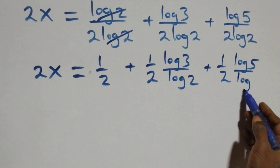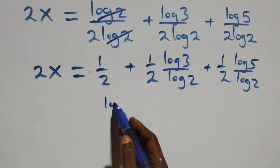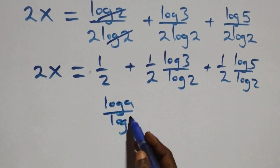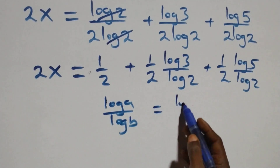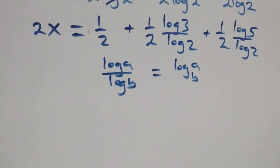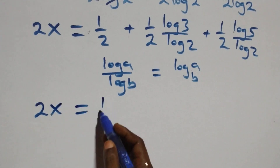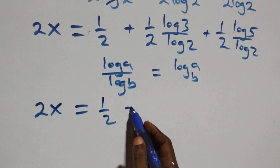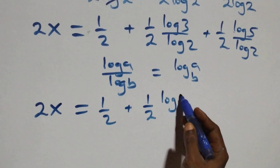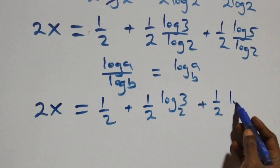We apply the change of base formula, where log a over log b equals log base b of a. So two x becomes one half plus one half times log base 2 of three, plus one half times log base 2 of five.